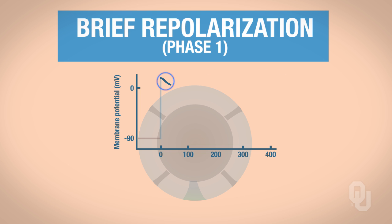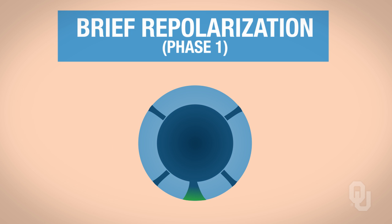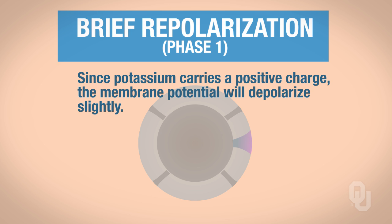Phase one is a brief repolarization period. When the peak of the action potential is reached, the voltage-gated sodium channels inactivate. However, voltage-gated potassium channels are now open, and potassium moves out of the cell. Since potassium carries a positive charge with it, the membrane potential will repolarize just slightly. This is why this is called brief repolarization.